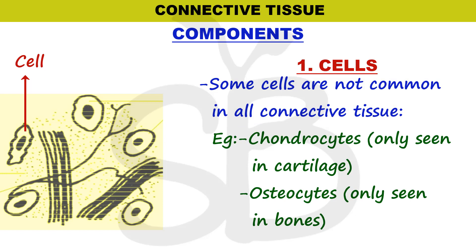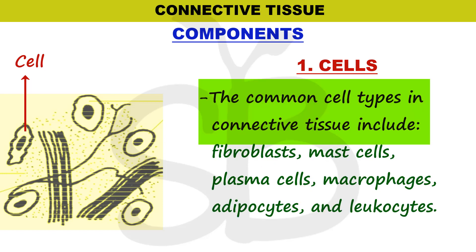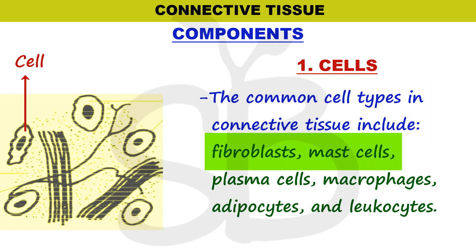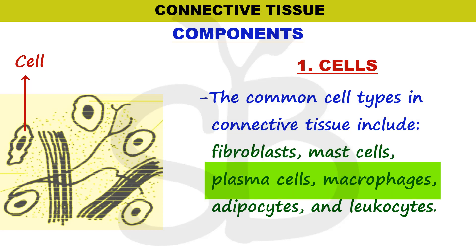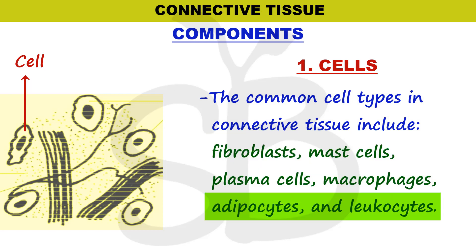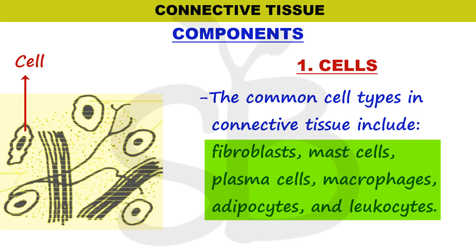There are also some common cells found across connective tissues. These include fibroblasts, mast cells, plasma cells, macrophages, adipocytes, and leukocytes. These are the common cell types present in connective tissue.